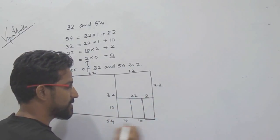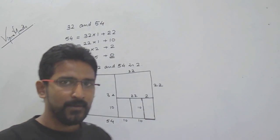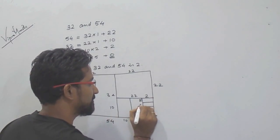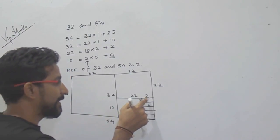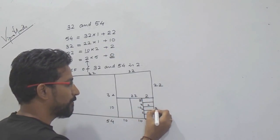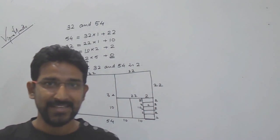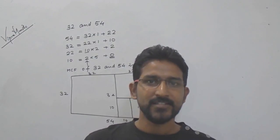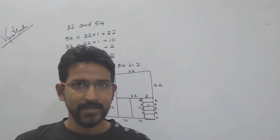The remaining rectangle is 2 by 10, because 10 plus 10 equals 20 and 22 minus 20 is 2. The largest square in this rectangle is 2 by 2. We can cut five 2 by 2 squares — 2 plus 2 plus 2 plus 2 plus 2 equals 10 — and there is no leftover part. So we can divide the entire 54 by 32 cake into 2 by 2 squares with no remainder. This is the application of HCF in real life examples.